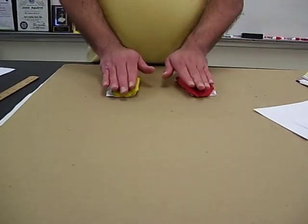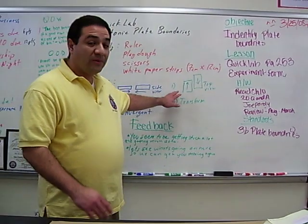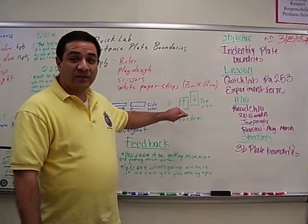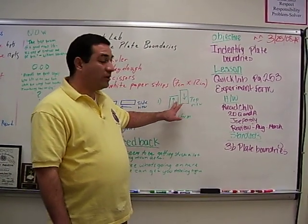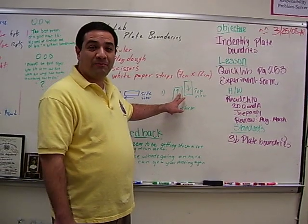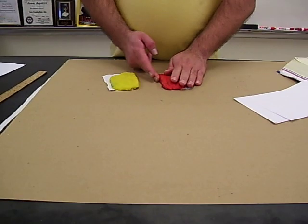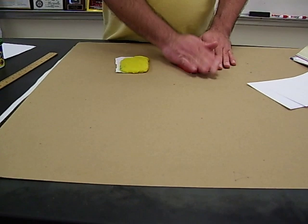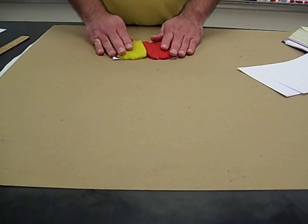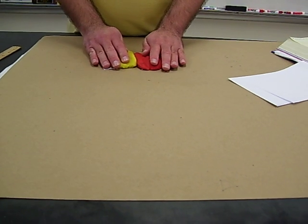The second part of the lab, you're simulating a transform fault or transform boundary, the most famous of which is the North American plate sliding past the Pacific plate. And right in the middle you have the San Andreas Fault. I reshape these and put them against one another, then just put a little bit of pressure going off to the sides.